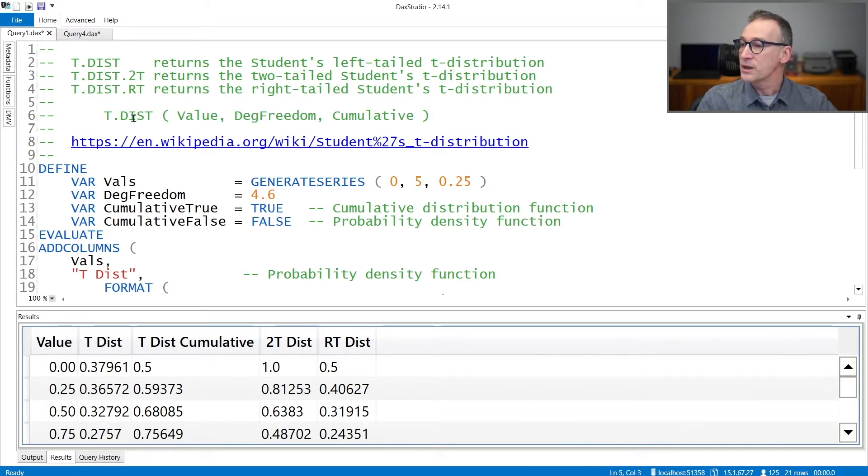In order to make it work, you need to provide to tdist the value for which you want to run the function, the degrees of freedom, and the cumulative argument that defines whether you want the value for the function for that point only or the cumulative value.